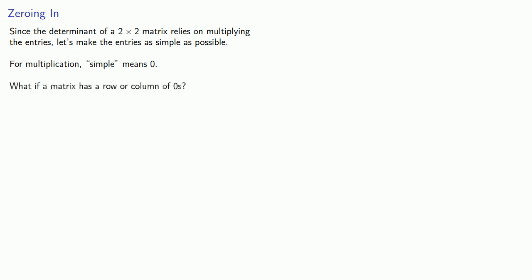Let's think about that. We do know how to compute the determinant of a 2 by 2 matrix. Since the determinant of a 2 by 2 matrix relies on multiplying the entries, let's start by making the entries as simple as possible. For multiplication, simple means zero. So we might ask: what if a matrix has a row or column of zeros?